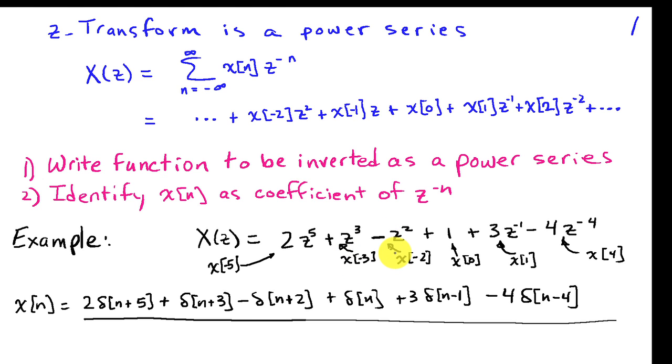We have minus 1 in front of Z squared. So that's X of minus 2. The coefficient of Z to the 0 is 1. So that's going to be X of 0. And then 3 will correspond to X of 1.